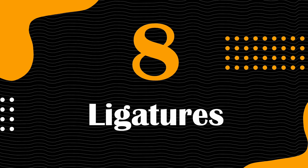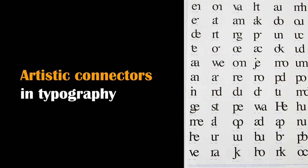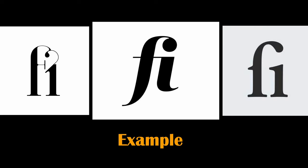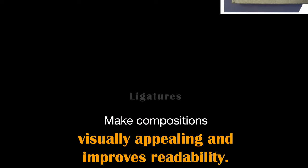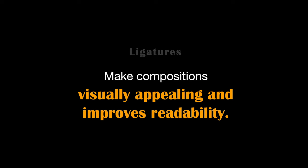Our next term is Ligatures. Ligatures are the aesthetic connectors in typography, blending letter forms into graceful, harmonious unions. These specialized characters replace specific letter combinations to enhance the visual flow and aesthetics of text. For example, instead of 'fi' appearing as two separate characters, a ligature can connect them into a single fluid character. This results in a more visually pleasing and legible representation, especially in fonts with elaborate or decorative letter forms. By mastering ligatures, designers unlock a world of elegant typographic design where letters seamlessly join together.